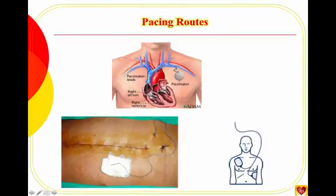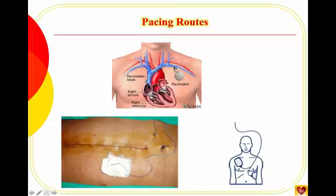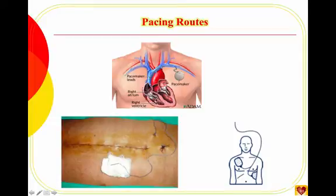The pacemaker generator is placed in the subclavian area through a small incision. The leads are threaded through a catheter in the subclavian vein toward the right atrium. If pacing the atria only, one wire is left in the atrium; for ventricular pacing, the wire is placed in the ventricular wall. If both chambers need pacing, two wires are used — one in each.